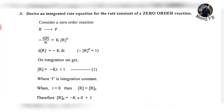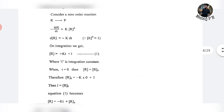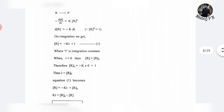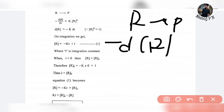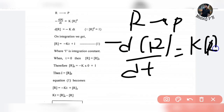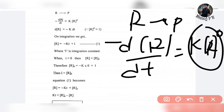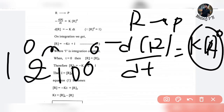Next, derive an integrated rate equation for the rate constant of a zero order reaction. It's very simple. First, consider zero order reaction: R tends to P. If you differentiate with respect to t, you get minus dR divided by dt is equal to the rate constant k into R to the power of zero. Since this is zero order, anything to the power of zero is 1.